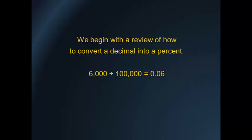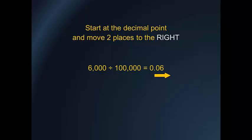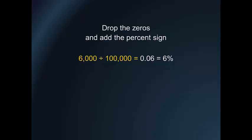For example, 6,000 divided by 100,000 equals 0.06. Start at the decimal point and move two places to the right. Drop the zeros and add the percent sign. 0.06 equals 6 percent.